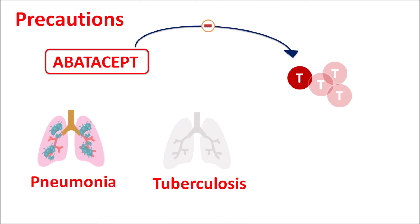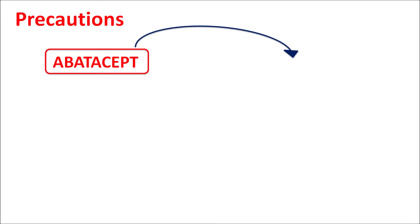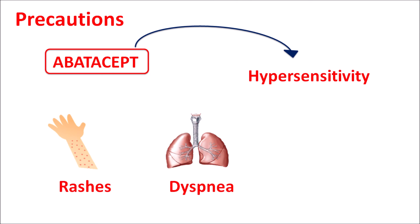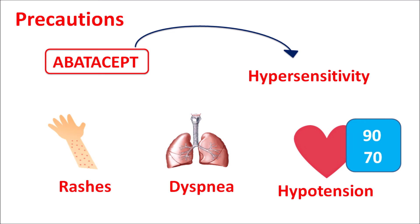Abatacept can also increase the risk of respiratory tract infections and urinary tract infections. All this should be considered when abatacept is prescribed for treatment of rheumatoid arthritis. Similarly, this drug can produce hypersensitivity, including skin rashes, dyspnea, difficulty in breathing, and hypotension, all of which should be considered when this drug is prescribed.